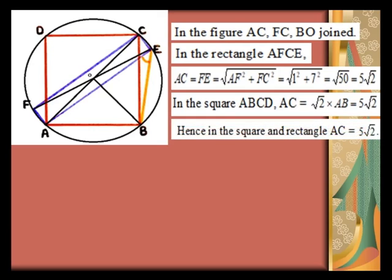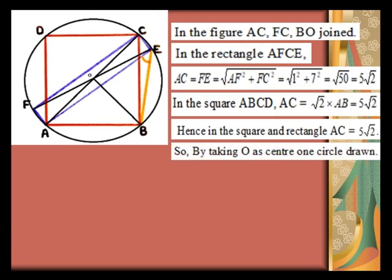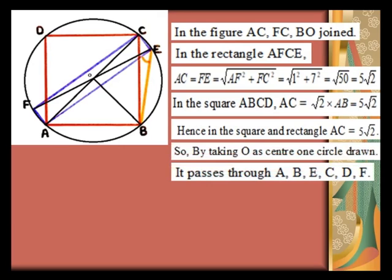Hence, in the square and rectangle, AC equals both 5 root 2. By taking O as center, one circle is drawn. It must pass through A, B, C, D, E, and F.